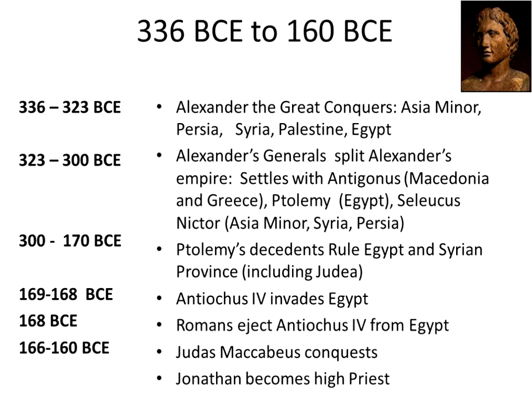In 323, the generals split Alexander's empire. It settles with Antigonus in Macedonia and Greece, Ptolemy in Egypt, and Seleucus Nicator in Asia Minor, Syria, and Persia.